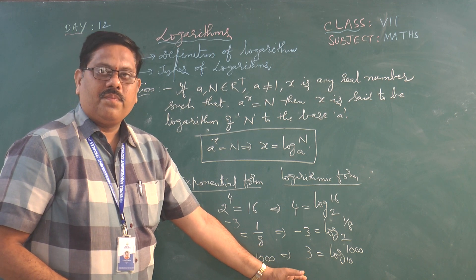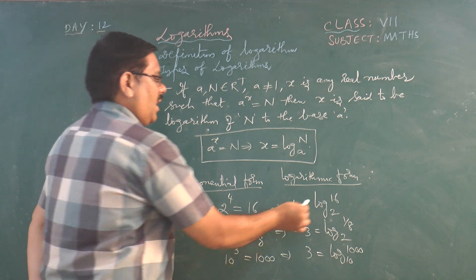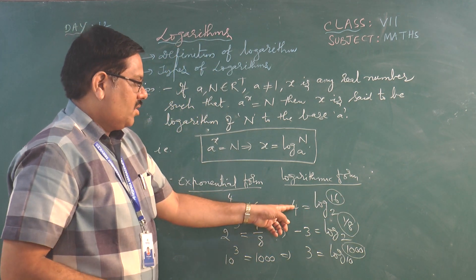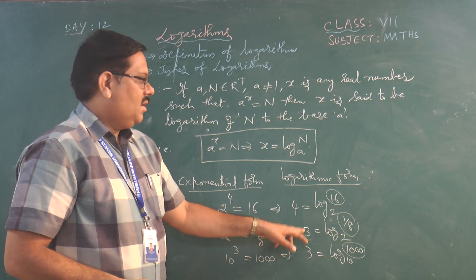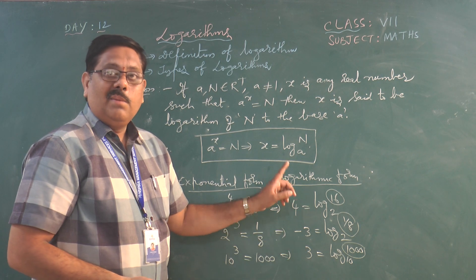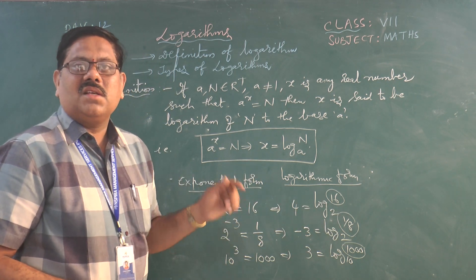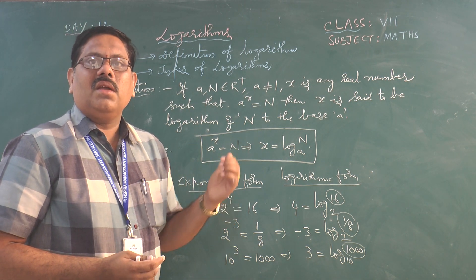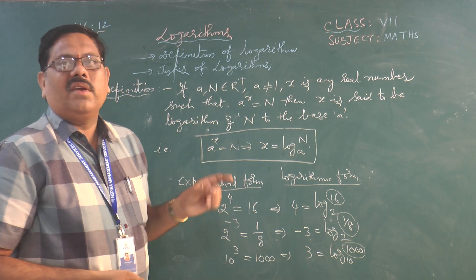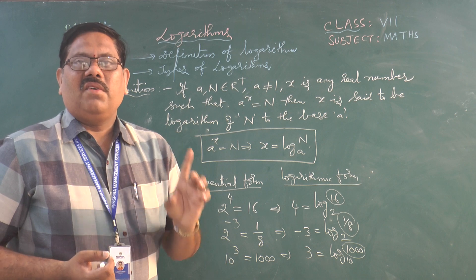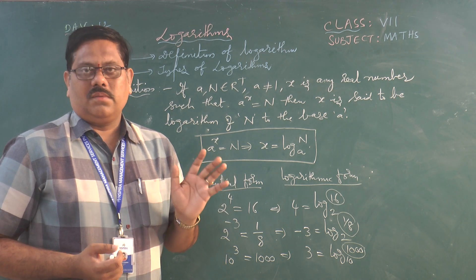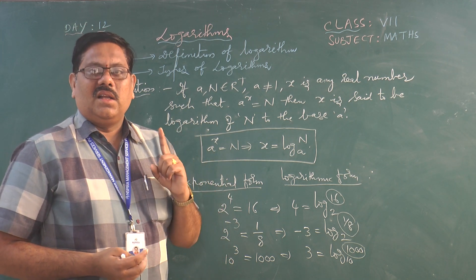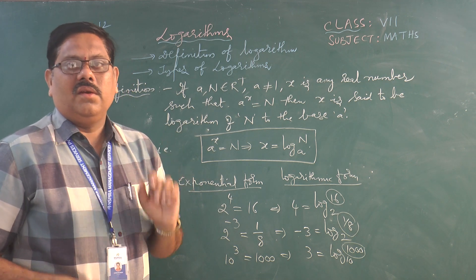Looking at these examples — whether the argument is 16, 1/8, or 1000 — the logarithmic value may be positive or negative, but the arguments are always positive real numbers. The argument is never negative or zero. So we conclude: logarithms are defined only for positive real numbers, not for negative real numbers or zero. That is a very important point.